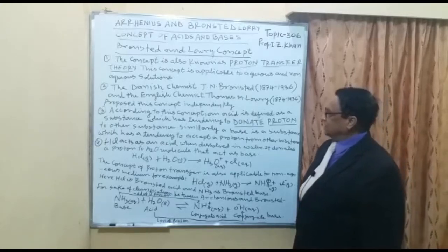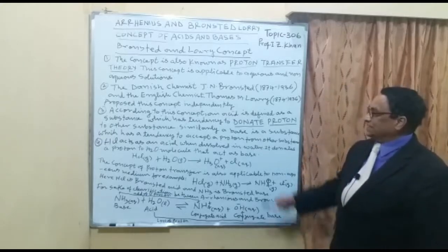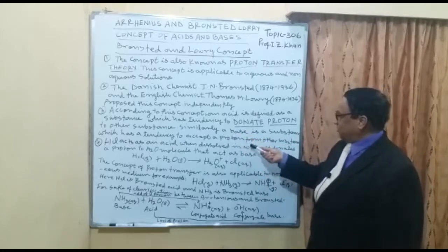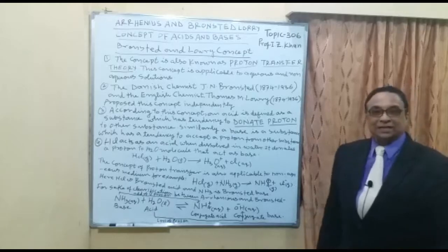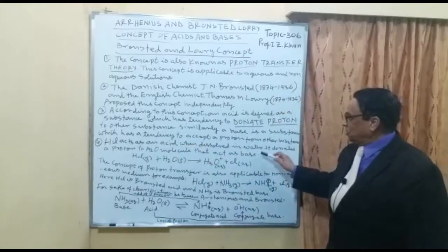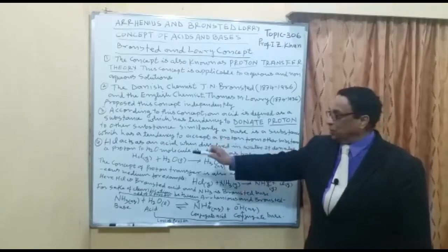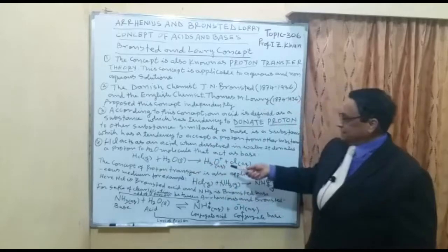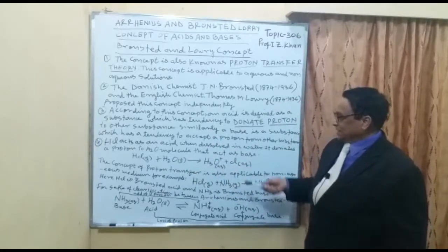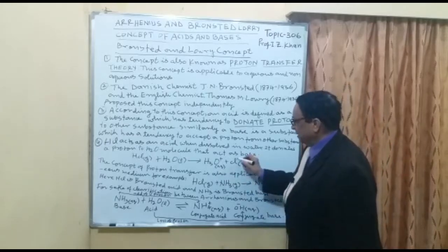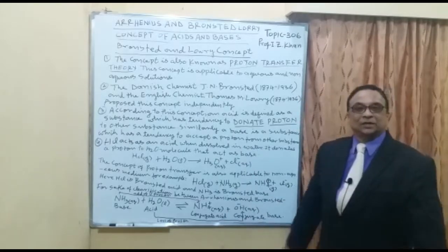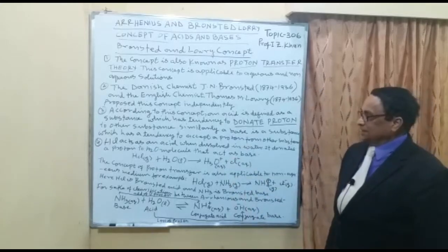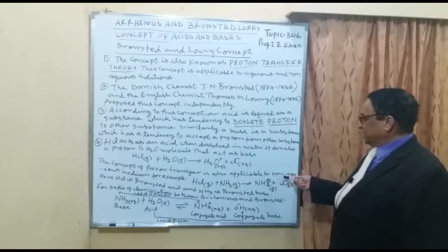Number three: according to this concept, an acid is defined as a substance which has the tendency to donate a proton to another substance. Number four: hydrochloric acid HCl acts as an acid when dissolved in water — it donates a proton to the H2O molecule, which acts as a base. So HCl(g) plus H2O(l) gives H3O⁺ (which has accepted the proton) plus Cl⁻. HCl acts as the acid because it donates the proton to water, and water acts as the proton acceptor.